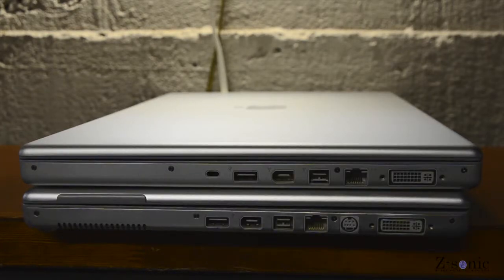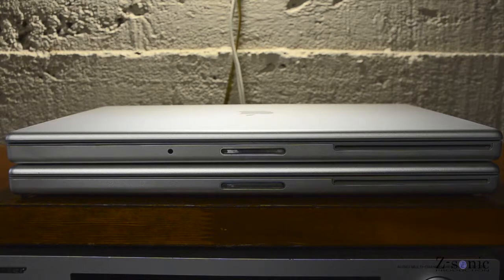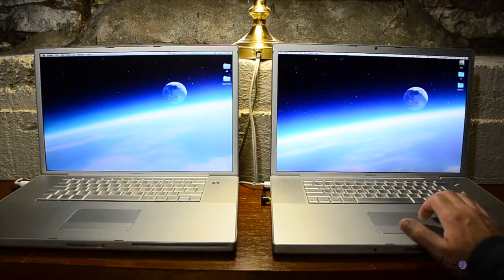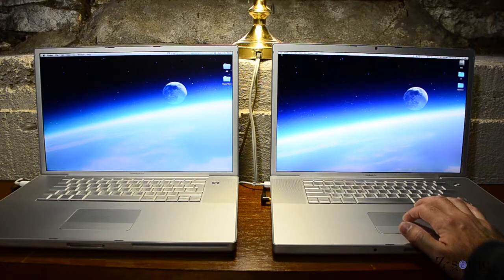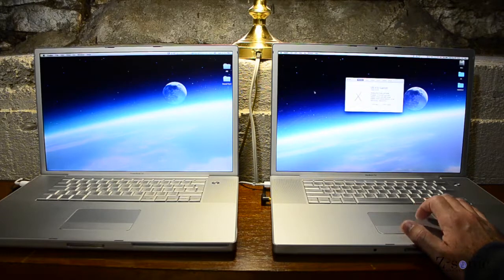They look almost the same. The MacBook Pro on top is just a little bit longer and the ports are different. The PowerBook has a 1.67 GHz PowerPC processor with 2GB of RAM and 60GB IDE SSD and the MacBook Pro has a 2.5 GHz Intel Core 2 Duo processor.